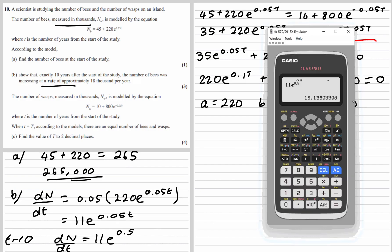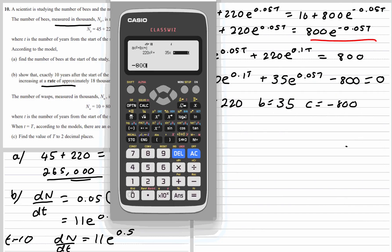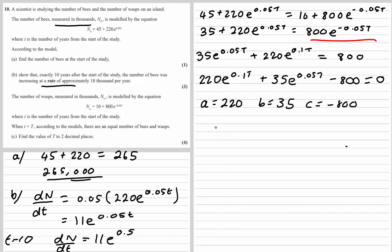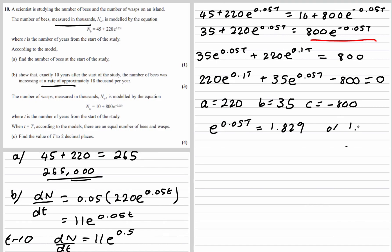The calculator will do the work — we go to equation, polynomial, degree 2, entering 220, 35, and −800. Our first answer gives e^(0.05t) = 1.8229. The second answer is negative, and since the exponential graph is never negative, that's not a valid solution, so we discard it.